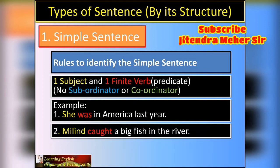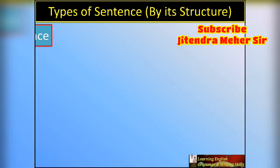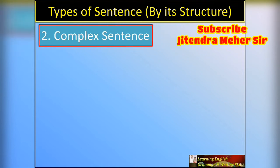Example: 'Million caught a big fish in the river.' 'Million' is the subject and 'caught' is the finite verb — one subject, one verb. The finite verb mostly comes next to the subject. From 'caught' to the end of the sentence is the predicate. Another example: 'I watch YouTube videos daily.' 'I' is subject, 'watch' is verb, and the rest is predicate. One subject, one finite verb — that's a simple sentence.